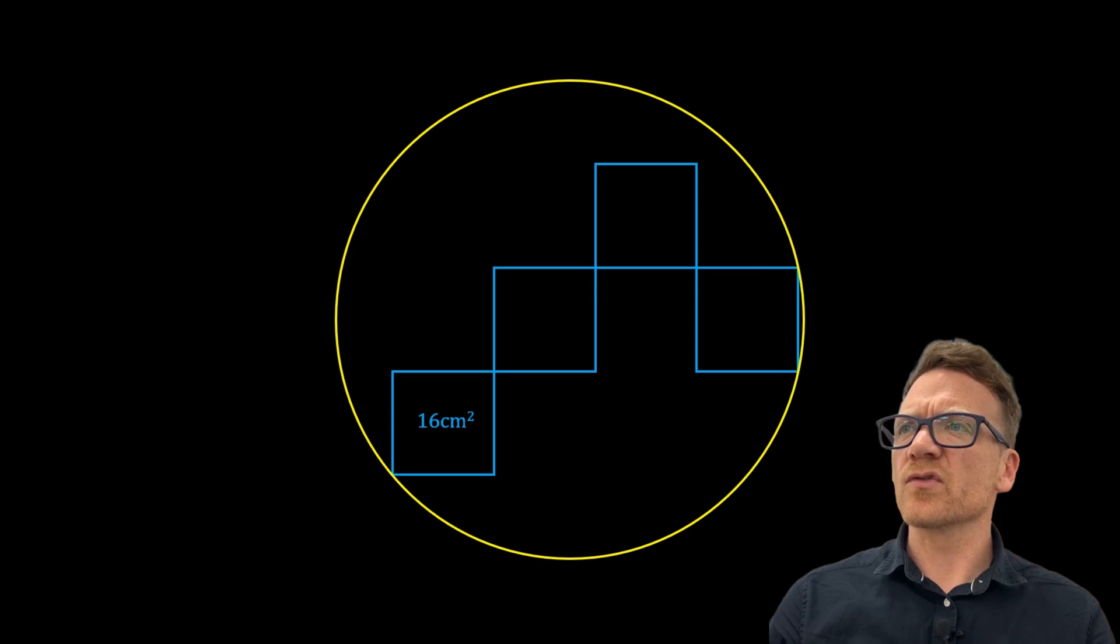The vertical sides are all parallel. The square on the right has two vertices that touch the circumference of the circle, and the bottom left vertex of the bottom left square also touches the circumference of the circle. So we want to find the area of the circle, and for that we need the radius.